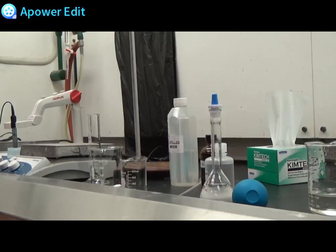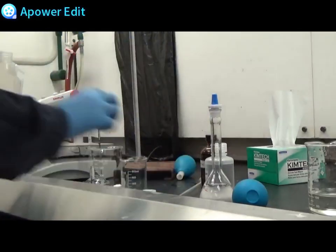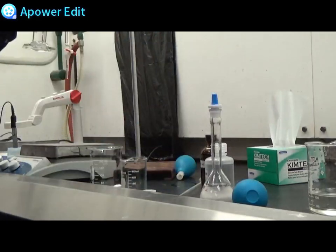I will begin preparing the acidic solution by measuring out 25 ml of distilled water and adding it to the titration beaker.